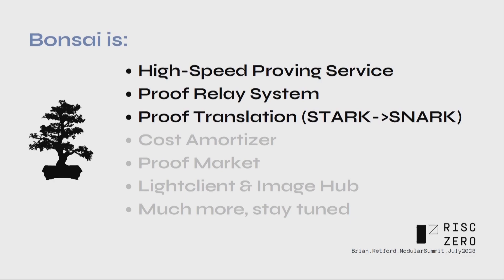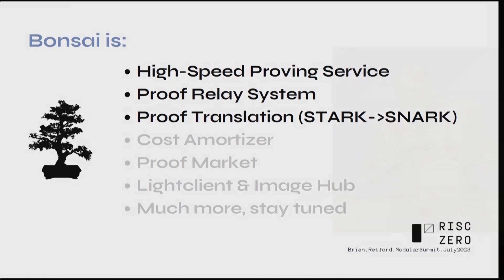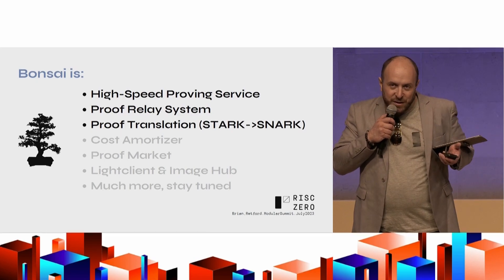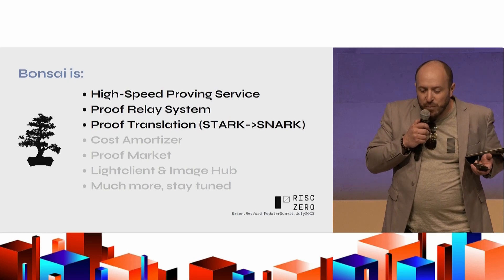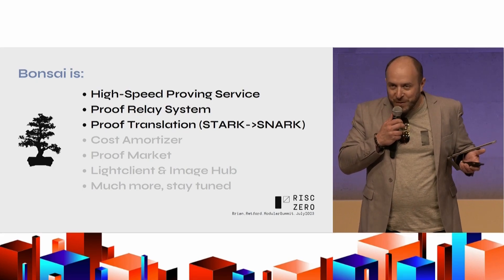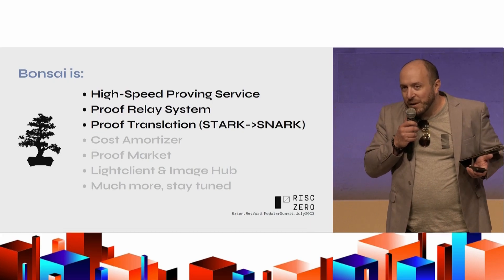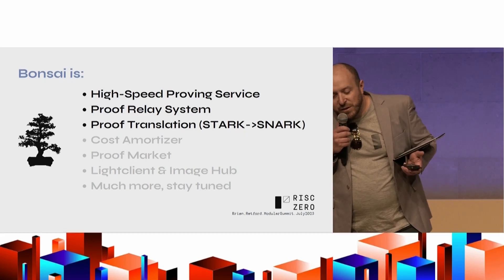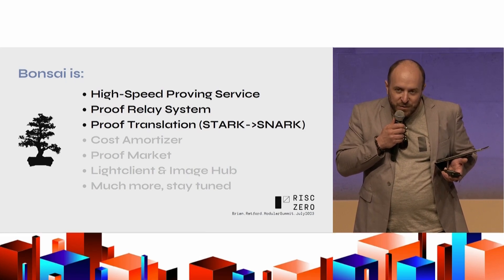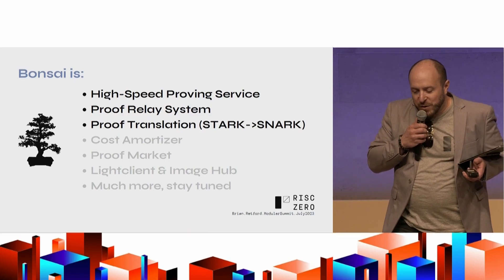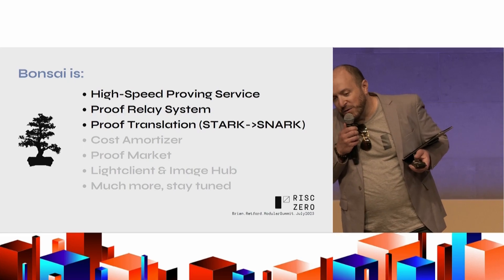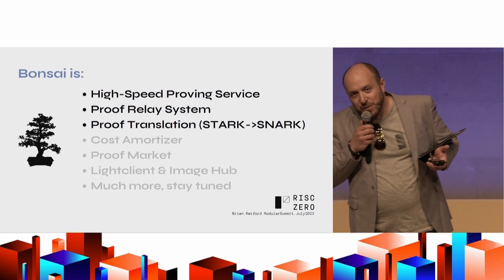We've also built out a proof relaying system, effectively focused on Ethereum chains for now. This is a full Foundry integration and template with smart contracts that let you easily interact with Bonsai from your smart contract. We're a STARK-based system, and that produces proofs that are too big to economically verify on Ethereum, so we've built — and this is brand new — a STARK-to-SNARK translator for our proving system, so you can actually just post a single GROTH-16 proof for any RISC-Zero computation. In the future, we'll also let people save money by aggregating a bunch of proofs and posting that for them, which will still integrate with the relaying infrastructure.